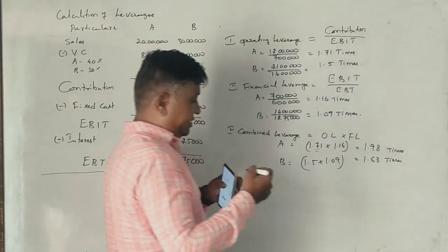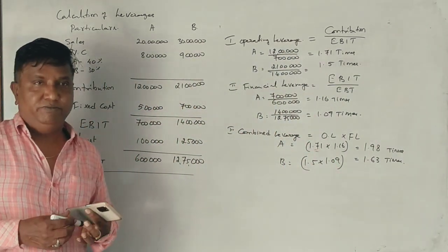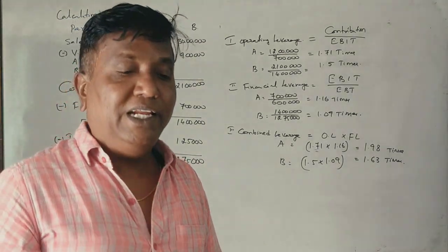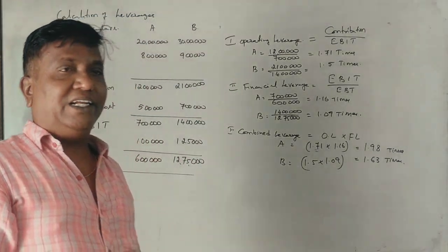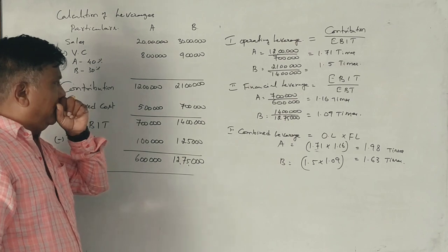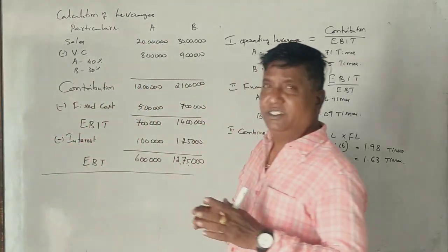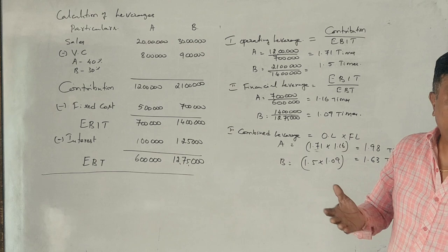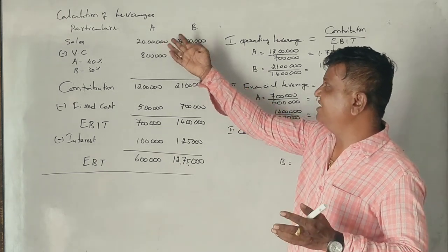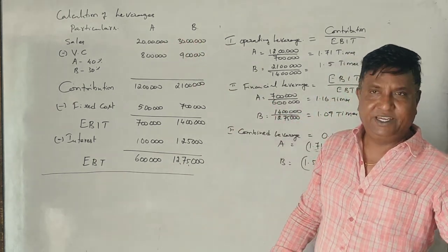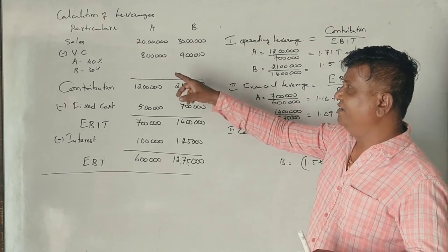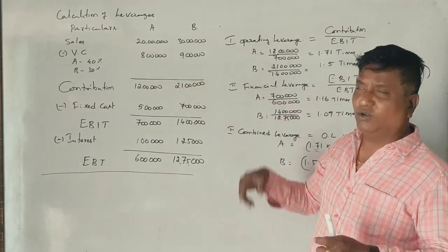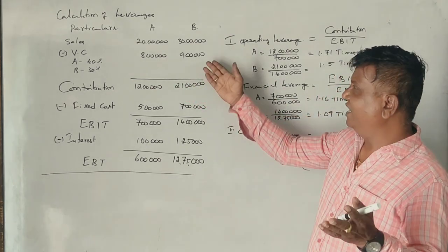Now, if you interpret the result, Firm A's contribution is 12 lakhs, almost 60% of sales. And the EBIT is about 7 lakhs.